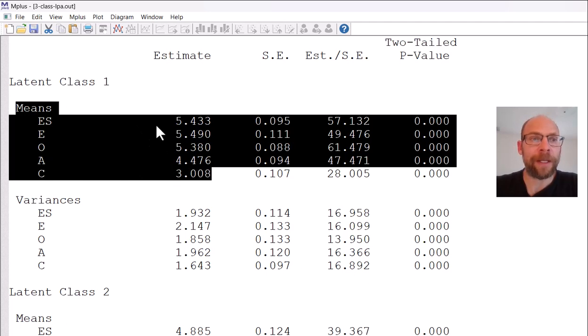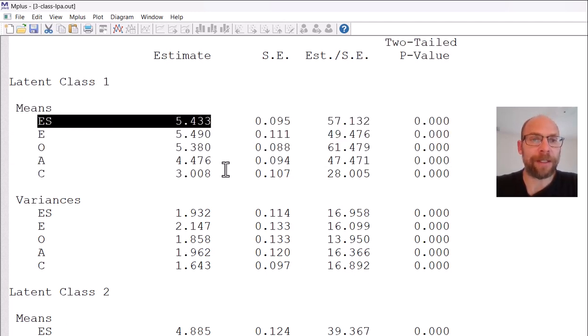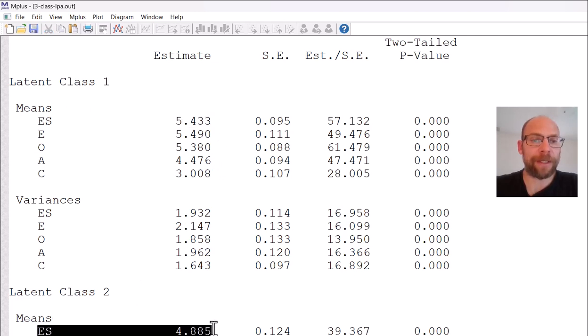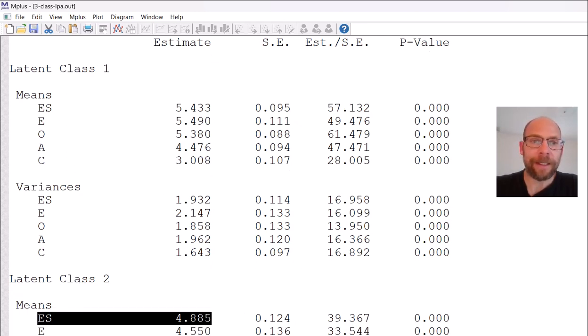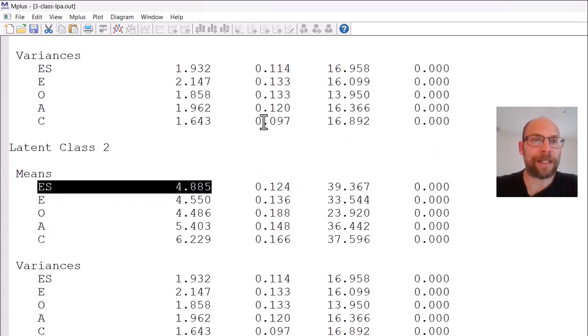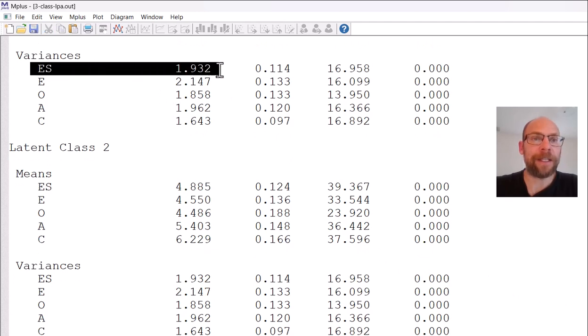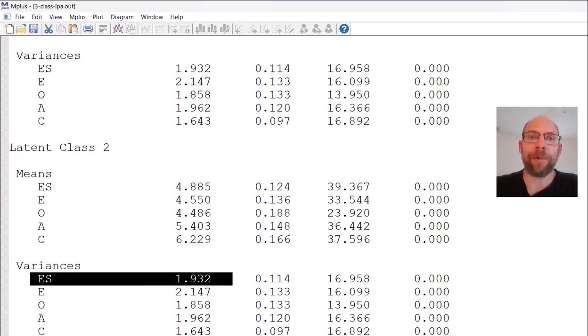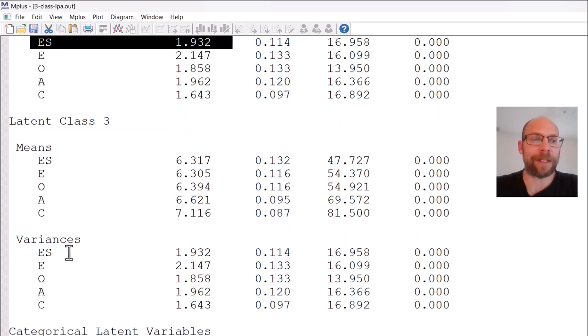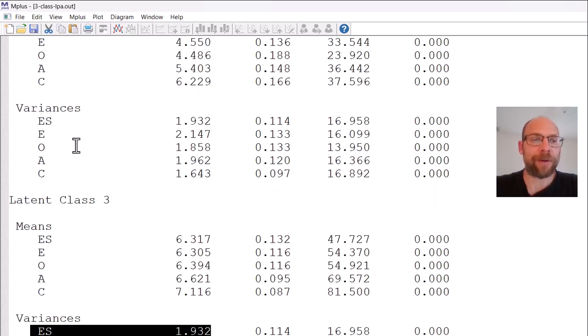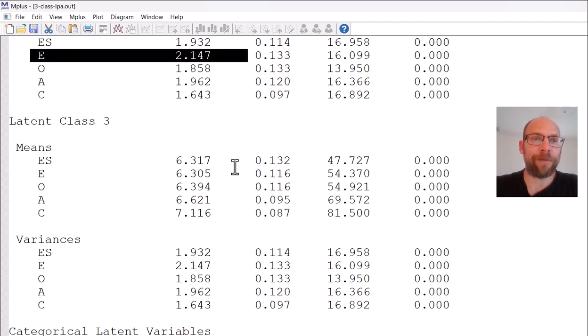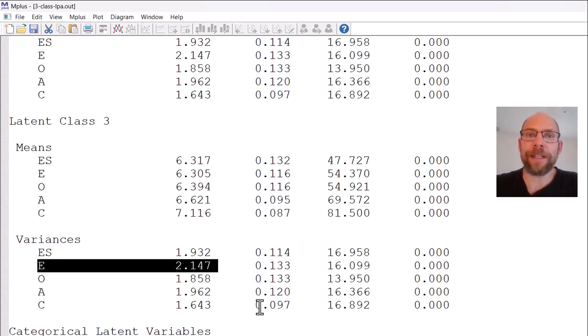Here, for example, class one differs in terms of the mean for emotional stability. The mean here is higher than the emotional stability mean in class two. What you will notice is that for the variances M plus has a default setting where the variances are held equal across classes for a given indicator. For example, the emotional stability variance estimate in class one is 1.932, and you find the exact same estimate also for emotional stability in class two and also in class three. The same for extraversion - the variance is 2.147 in all classes. All the indicators are assumed to have equal variances across all classes.